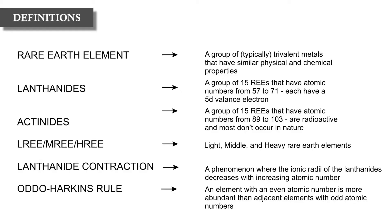We do have a second group of rare earth elements referred to as the actinides. We're not typically concerned with these in geology because they don't often occur in nature — they are a group of 15 rare earth elements with atomic numbers ranging from 89 to 103, and they don't occur in nature typically because they are radioactive.